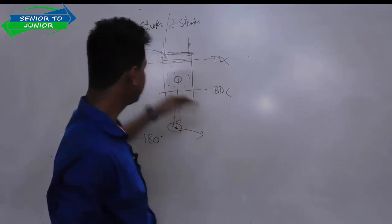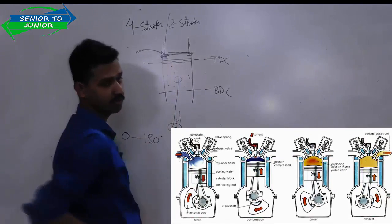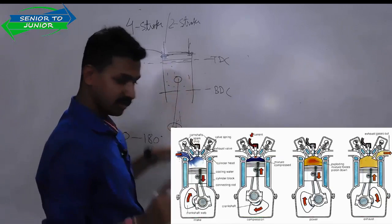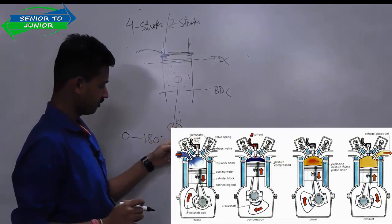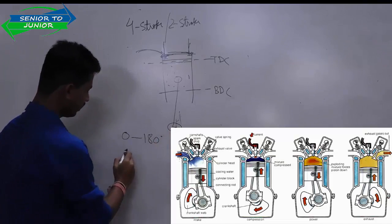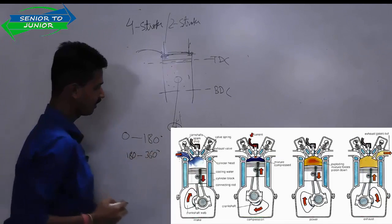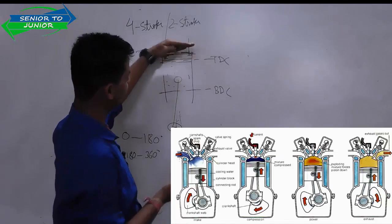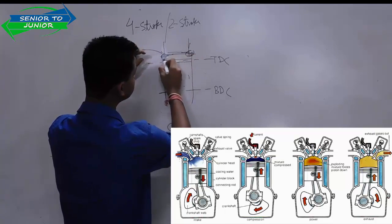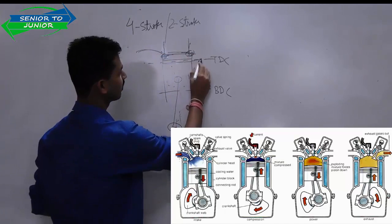Now what happens when this reaches the BDC? It gets closed. The valve closes. In the second part, your crank will rotate from 180 degrees to 360 degrees, and from here it will start compressing your charge. Now both valves are closed and the charge is getting compressed till the top dead center.